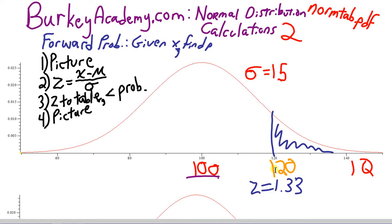So in a 10-second review, we drew a picture of what we were talking about, we calculated a z-score, z equals x minus the mean over the standard deviation, we got a z-score of 1.33.